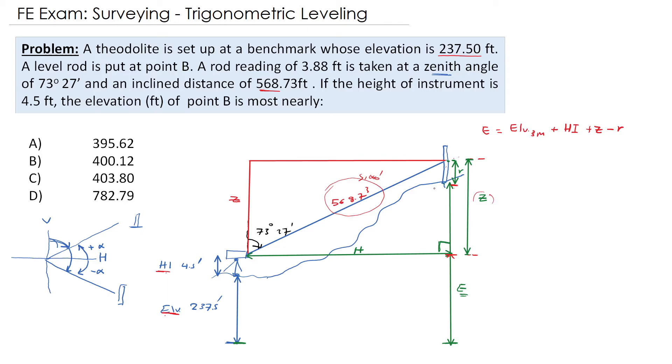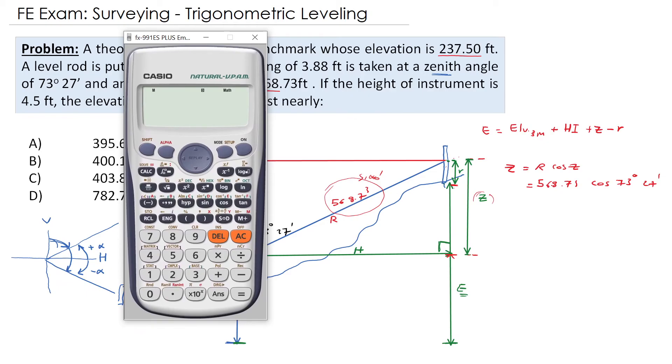Let's go back to our calculation. We need to evaluate z. Simply z is r cosine the angle here in between z and r. R which is 568.73 cosine 73 degrees 27 minutes. Now for us, I just want to remind you that we can input the angle as is.